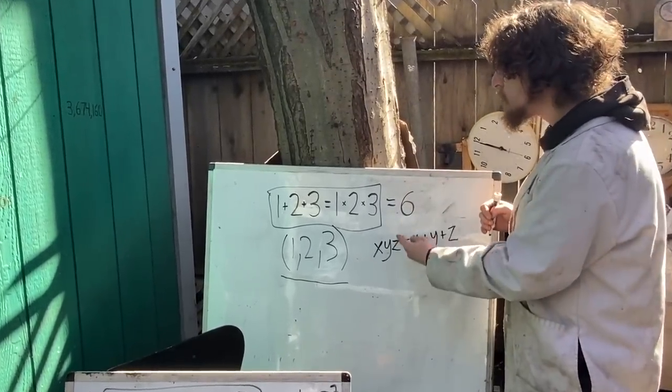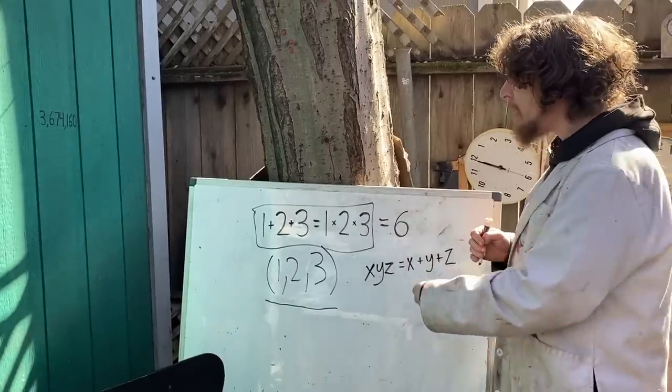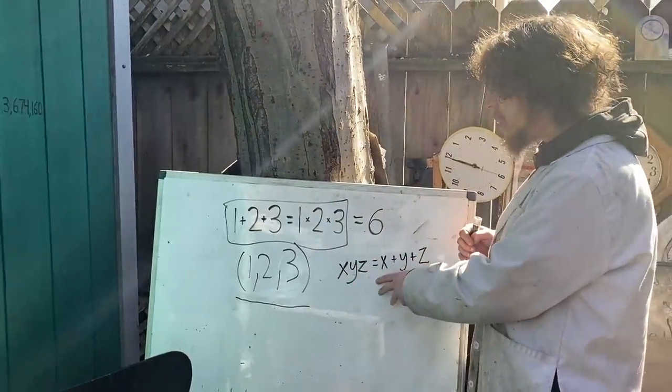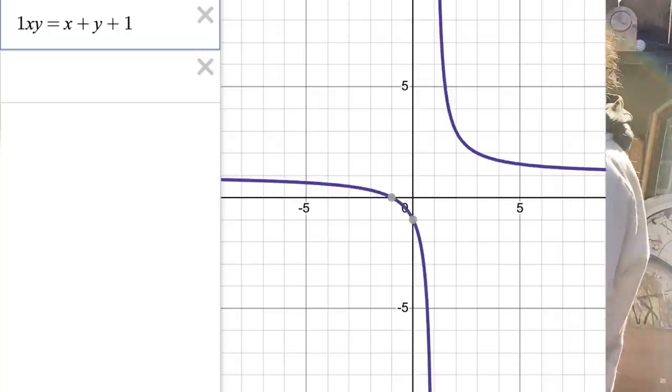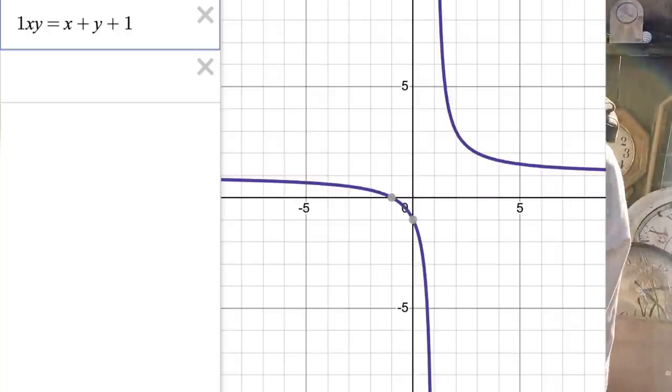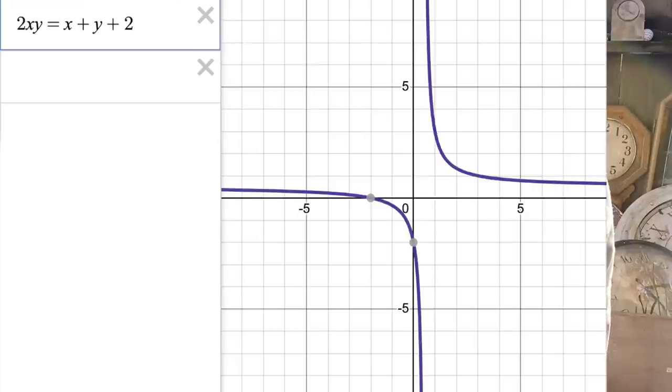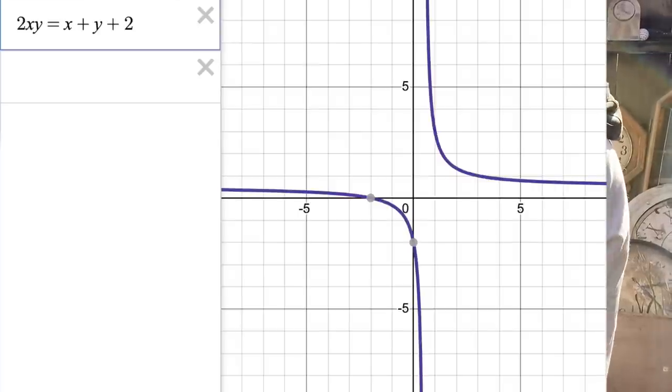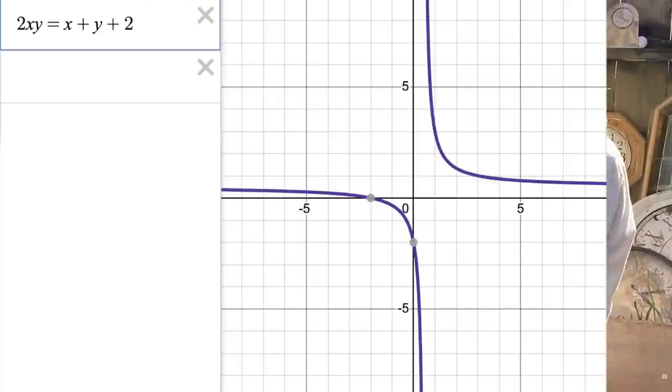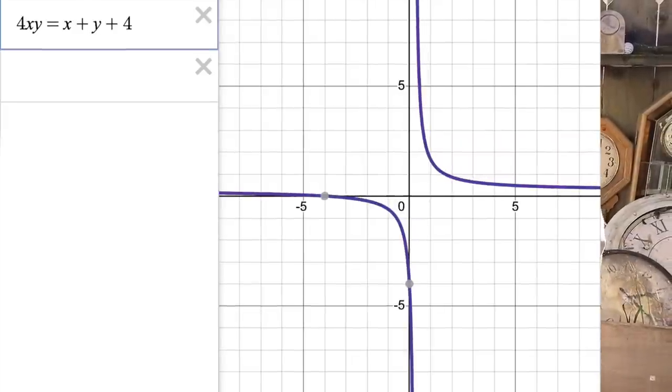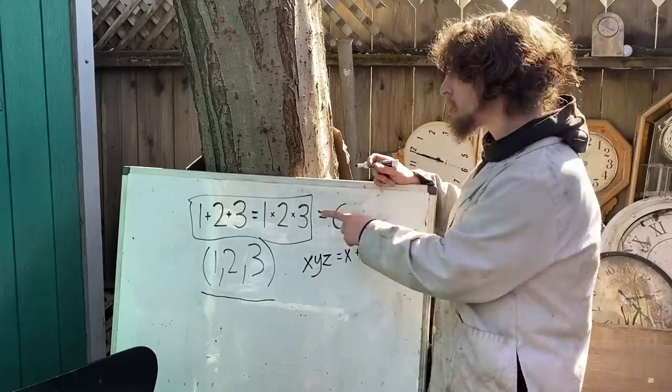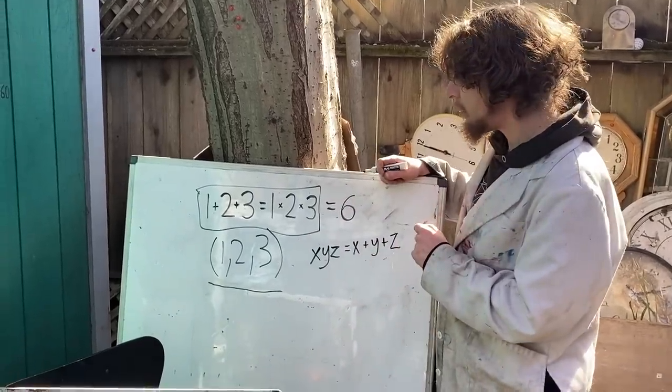I will show you some graphs of particular values of z we could set. Like we could say if z is 1, let's graph x, y times 1 is x plus y plus 1, which is here. Or if z is 2, here's the graph of 2xy equals x plus y plus 2. And here's when z is 3 and 4. And we can see this solution hidden in a few of those.